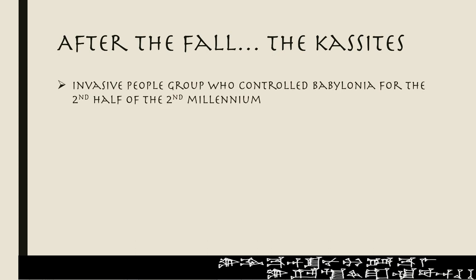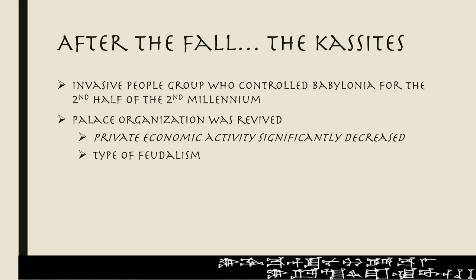Following this dark age, there's an invasive people group who comes and controls Babylonia for essentially the second half of the second millennium — these are the Kassites. The palace organization under the Kassites was revived, so private economic activity significantly decreased, instating a type of feudalism. The Kassites were part of that Amarna period Great Powers Club, and you can see some of that intrigue in our daily data video on the Amarna period.